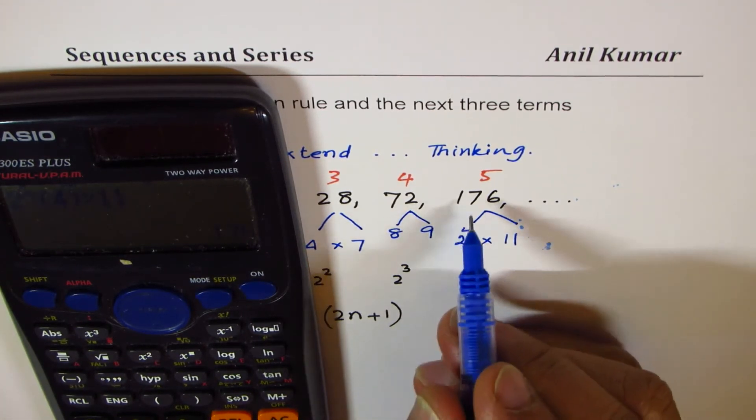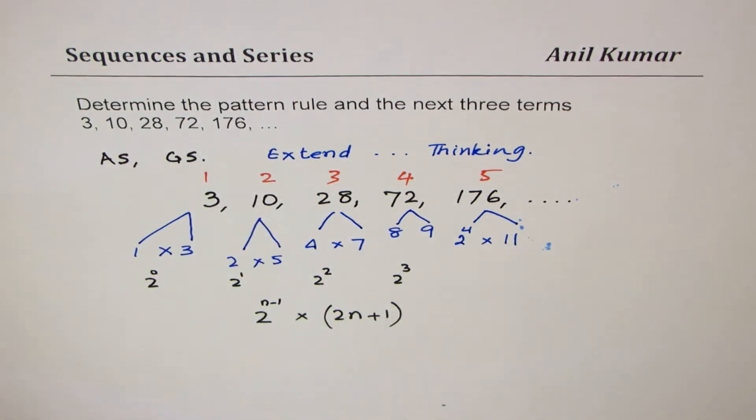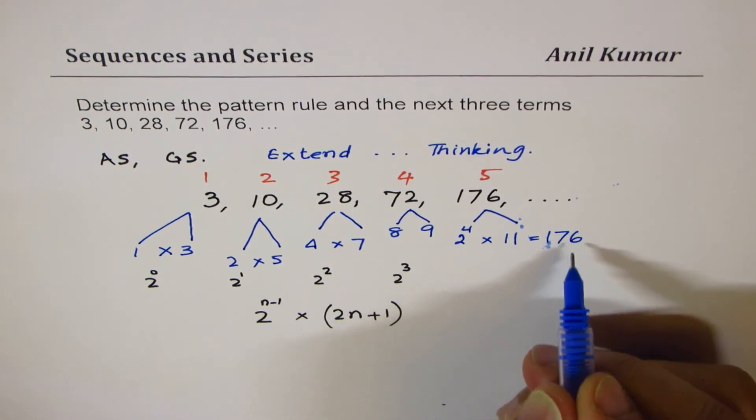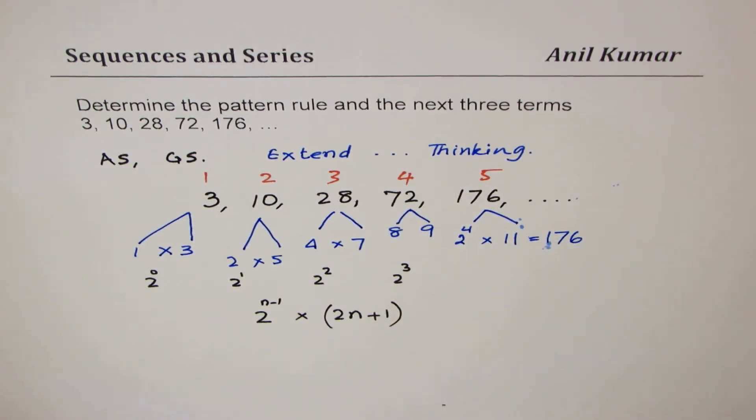Yes, we do get 176. So we do get 176. So this is equal to 176. And therefore, this rule works. So we can write down here, as our answer, as pattern rule,